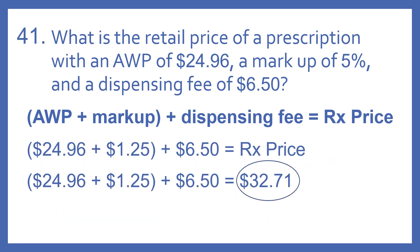So we have $24.96 plus $1.25 — that's our AWP and our markup — plus our dispensing fee of $6.50. We do the math, and that gives us $32.71 for the prescription price.